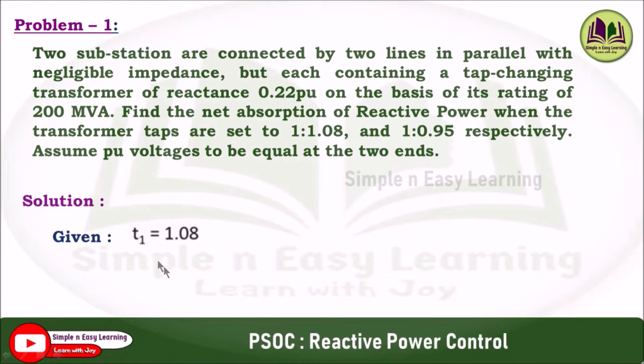Given data: the tapping T1 equals 1.08, T2 is 0.95, and the voltage V1 equals V2 equals 1.0 per unit. The reactance value is given as 0.22 per unit and the transformer rating is 200 MVA.